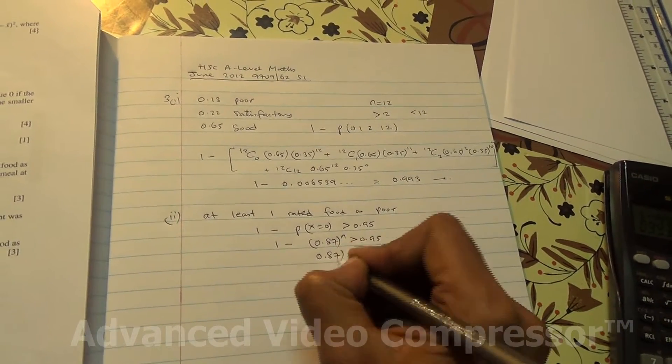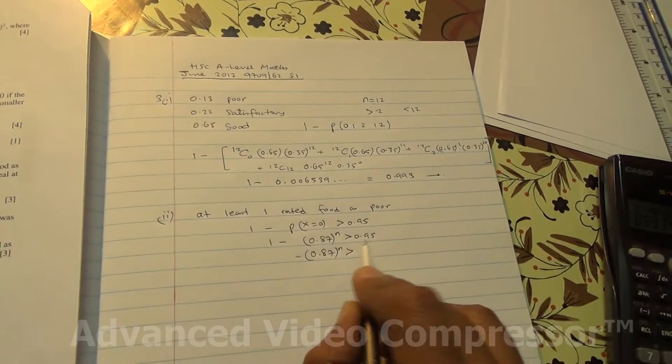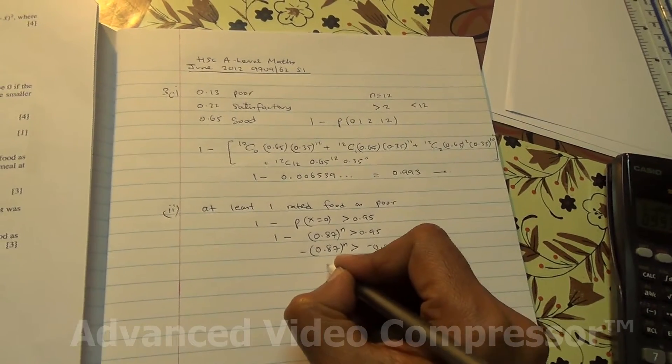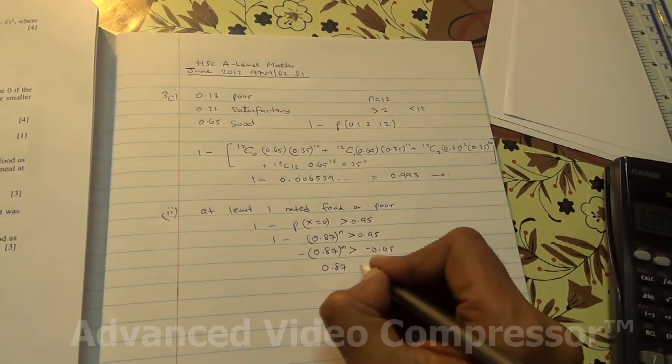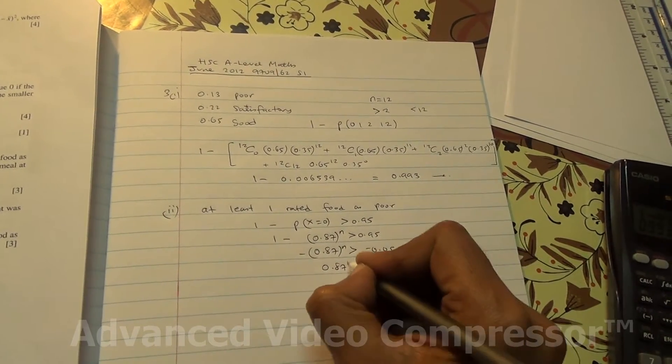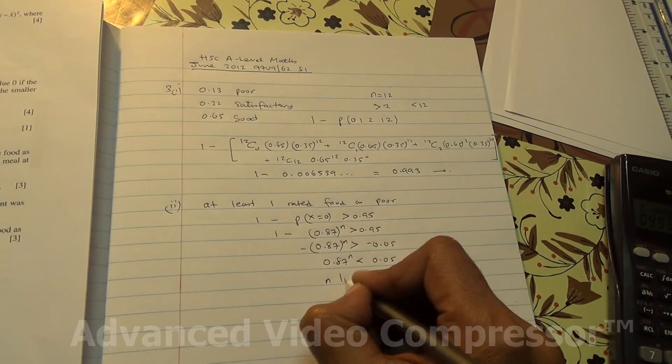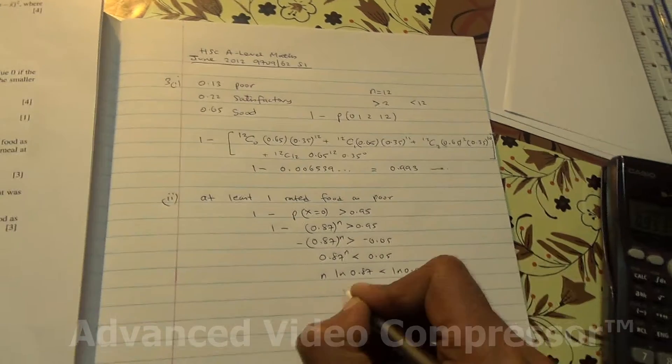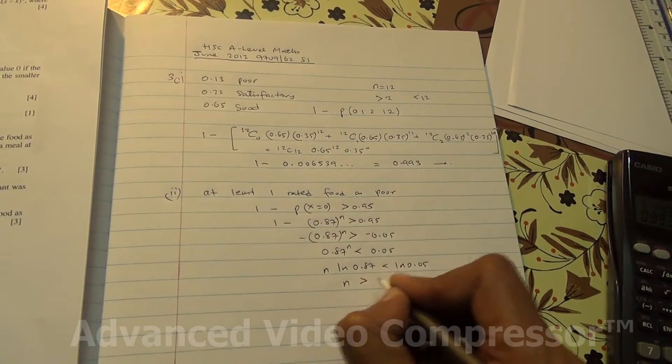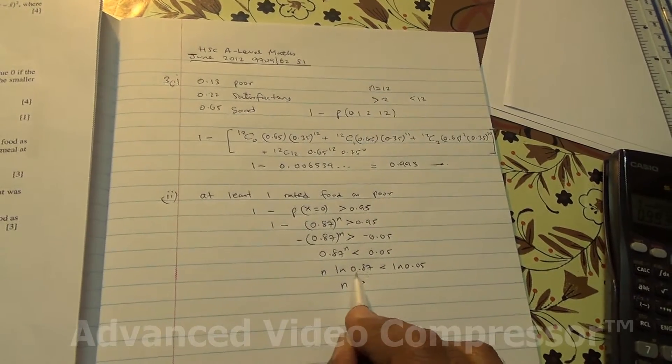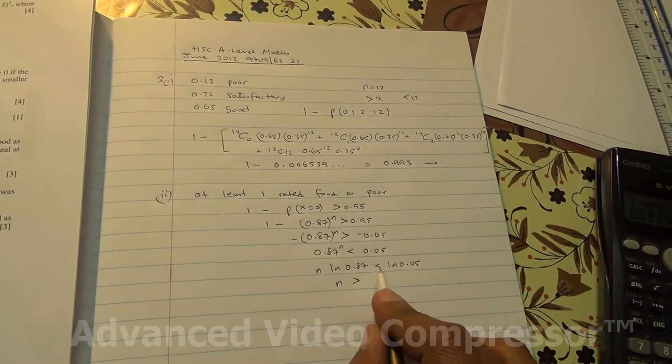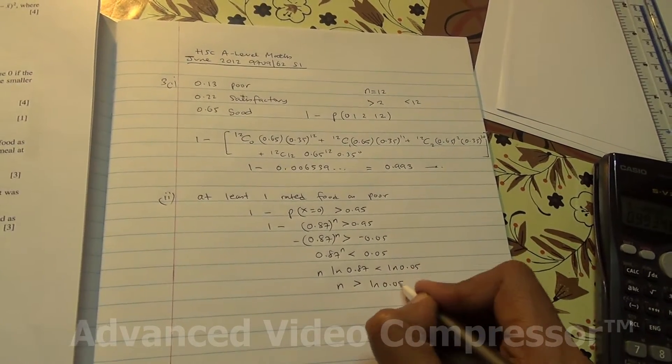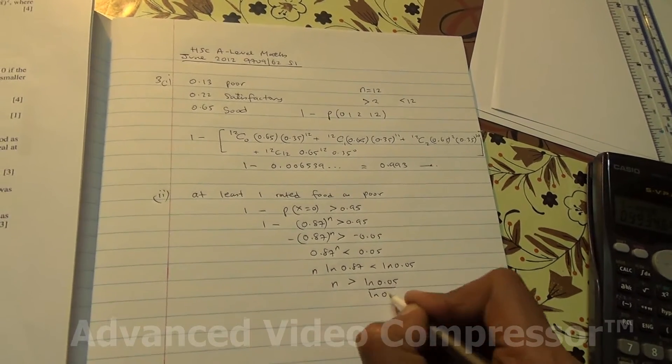So 0.87 to the power of n, greater than 0.95 minus 1 is minus 0.05. And therefore, we're going to be using natural logarithm to work out the value of n. So n ln 0.87 less than ln 0.05. n is greater because the natural logarithm of zero decimal something must be negative. So n is negative on the other side, the sign will change from less to greater.